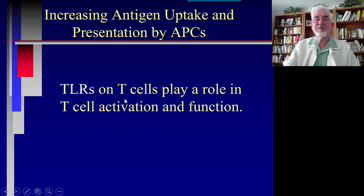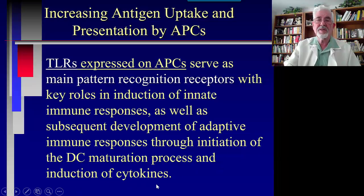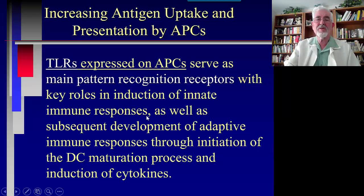Toll-like receptors (TLR) on T cells play a role in T cell activation and function. TLRs expressed on antigen-presenting cells serve as a main pattern recognition receptor with key roles in inducing the innate immune response, as well as subsequent development of the adaptive immune response, initiation of DC maturation, and induction of cytokines. Antigen-presenting cells go to the tumor, take up TLR materials, and bring them to the T cell, which then mounts a cytotoxic attack against tumor cells.